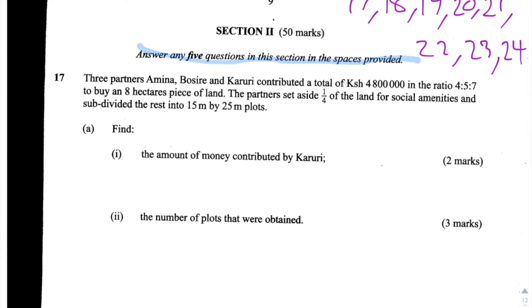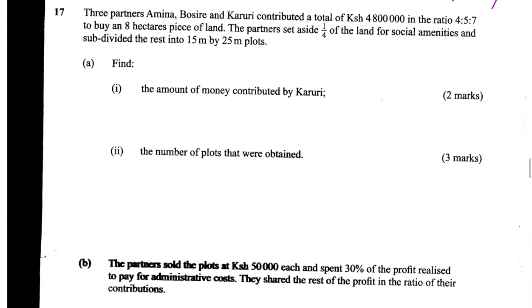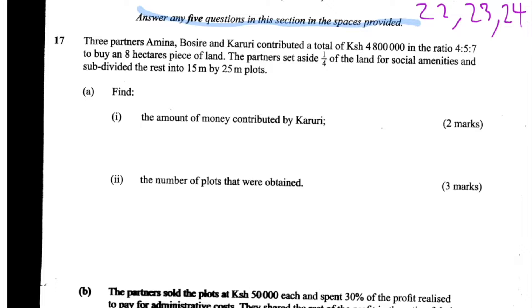Question 17: Three partners — Amina, Bosire, and Karuri — contributed a total of 4,800,000 shillings in the ratio 4:5:7 to buy an 8-hectare piece of land. The partners set aside a quarter of the land for social amenities and subdivided the rest into 15 by 25 metre plots. There are sections A and B, each worth 5 marks.